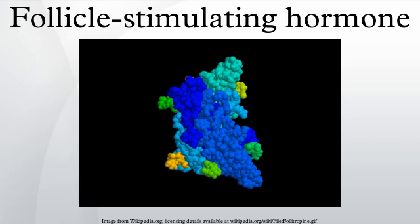FSH regulates the development, growth, pubertal maturation, and reproductive processes of the human body. In both males and females, FSH stimulates the maturation of germ cells. In males, FSH induces Sertoli cells to secrete androgen-binding proteins, and its secretion is regulated by inhibin's negative feedback mechanism on the anterior pituitary gland.